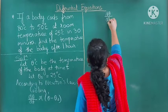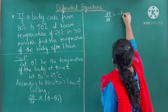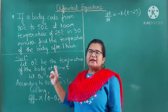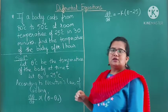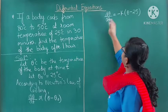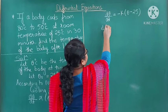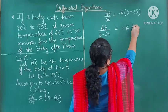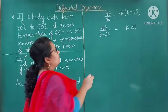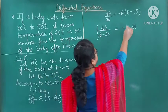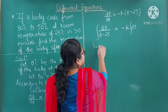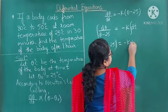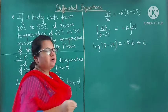That gives dθ/dt = −k(θ − 25). The negative sign is because the temperature of the body is decreasing. We do variable separation: dθ/(θ − 25) = −k·dt. Integrating on both sides, we get log(θ − 25) = −kt + C, where C is the constant of integration.